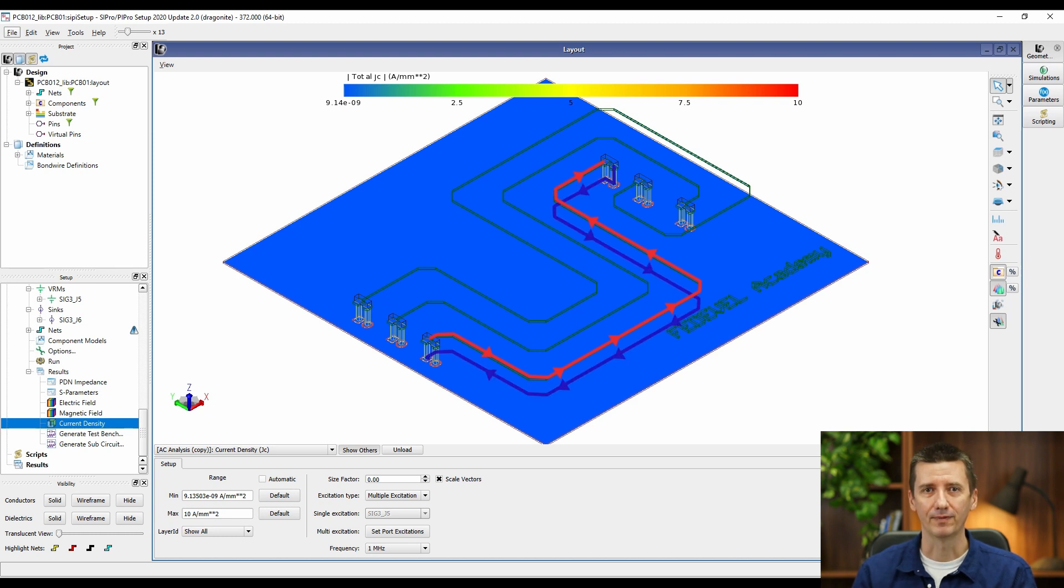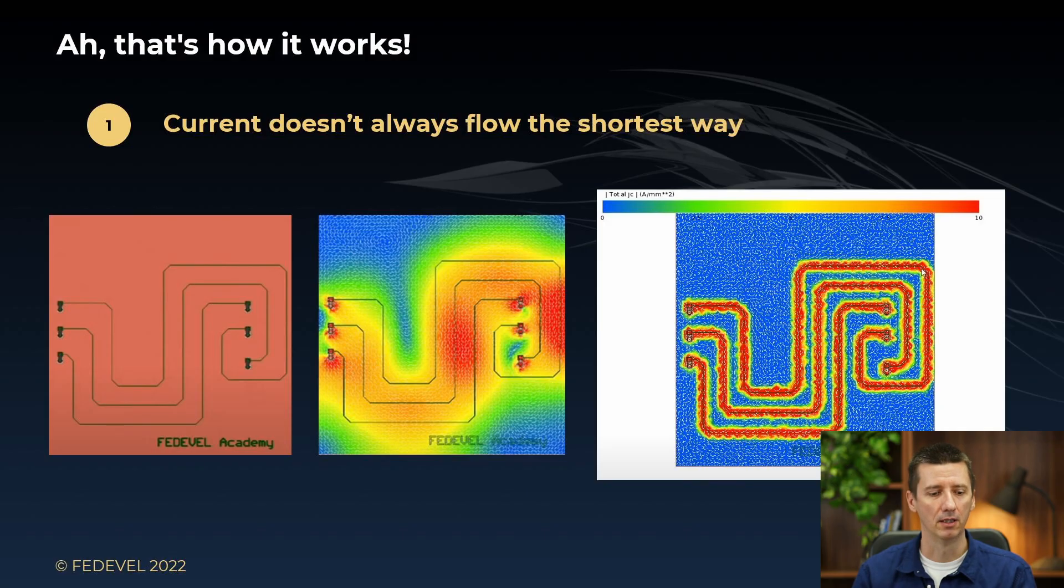And then there was this moment when I realized, oh, that's not how I should imagine currents in high-speed circuits. The better way to imagine return currents in high-speed signal is that these return currents travel together with the signal edge, like this.